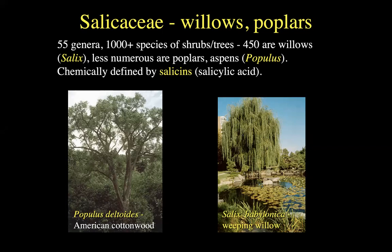There are lots of species of willows here in Colorado, and I find these really hard to identify. We'll also talk about aspens. These all share a really important secondary compound — salicins or salicylic acid — from which we get a lot of pain mitigation. Indeed, aspirin was originally derived from this.